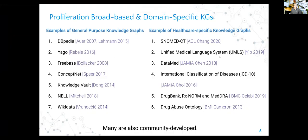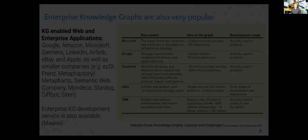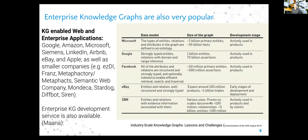There is a proliferation of knowledge bases and knowledge graphs - some are general purpose and many are domain-specific. Just in the one domain of healthcare there are many that are either a knowledge graph or a source for knowledge graphs. In enterprises, knowledge graphs are so widely used. One of my students in 2019 went to the research group at Amazon, called back in a couple of months and said, 'I can't find a single project around me that is not using a knowledge graph.' There is a huge growth of knowledge graphs.